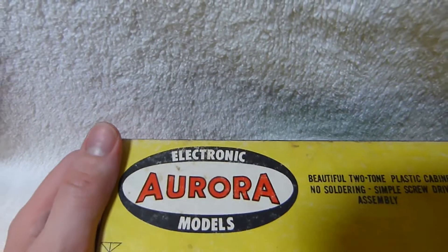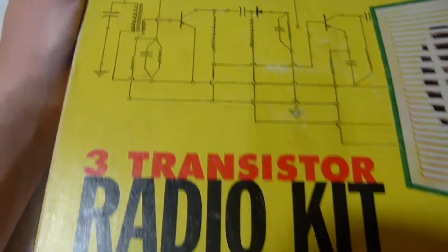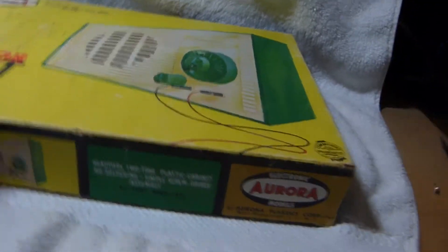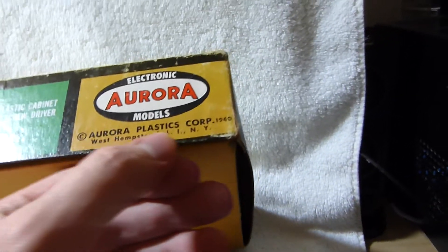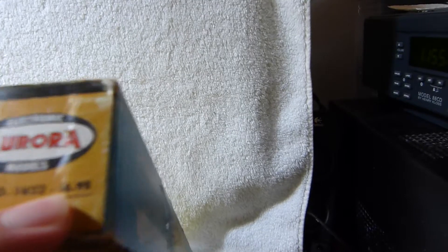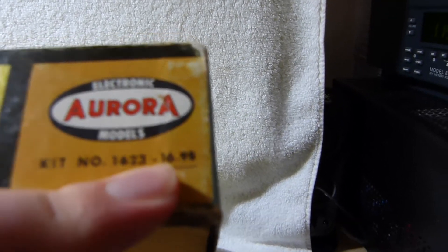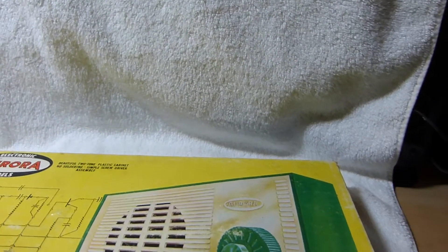This is the deluxe three transistor set that Aurora made. They also had a two transistor and one transistor kit. They were based out of West Hempstead, Long Island. It's the model 1623, and I believe that is the price there. The two transistor set was like 13 bucks, so 17 bucks seems reasonable for a three transistor set with a more complicated circuit.